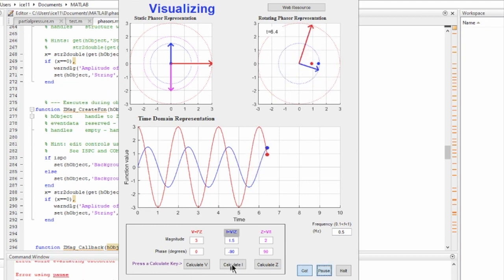So I'm going to go ahead and pause this. Let's look at capacitors now. In capacitors, the impedance is lagging, so it's negative 90 degrees, and the current actually leads the voltage by 90 degrees. So I'm going to hit calculate and go.